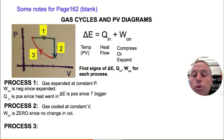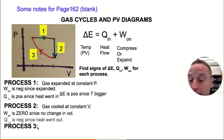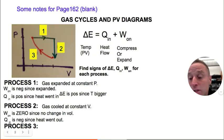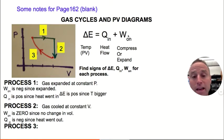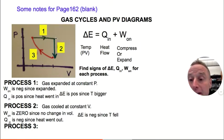The pressure dropped while at constant volume. Heat must have left the system, so Q in is negative. Since there was no work done but heat left, negative plus zero gives a negative delta E — the internal energy decreased. Another way to see this: the product of P and V went down, so the temperature went down, confirming delta E is negative.